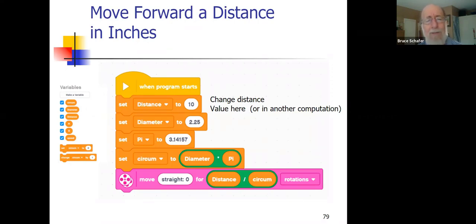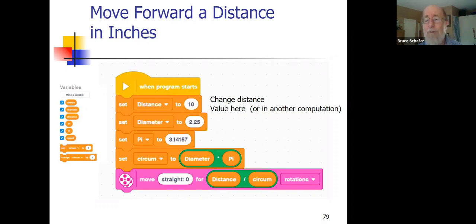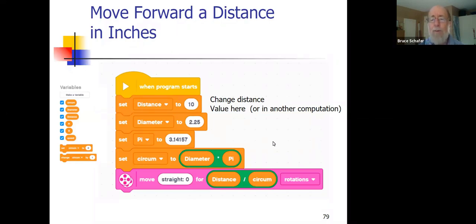Going back to the distance example: we set a variable called 'distance' to 10 because we want the robot to go 10 inches. We measured the wheel diameter at 2.25 inches, so we set 'diameter' to 2.25. Pi is a universal constant, approximately 3.14157. We set 'circumference' to diameter times pi. Then when we want to go a particular distance, we divide the distance variable by circumference. You don't absolutely need a distance variable — you could just keep circumference around and say 3 divided by circumference or 7 divided by circumference. It's a stylistic question whether you put everything in variables or just some things.